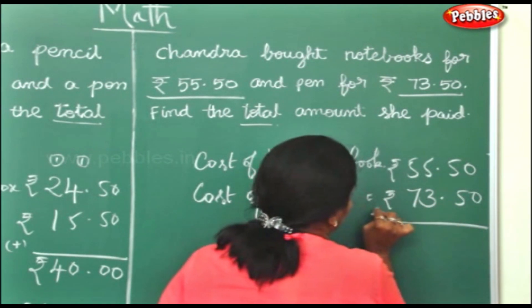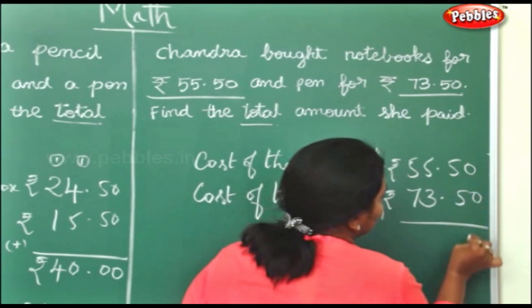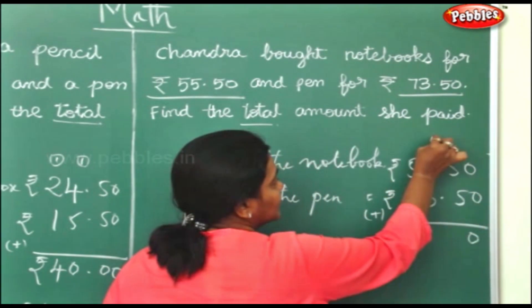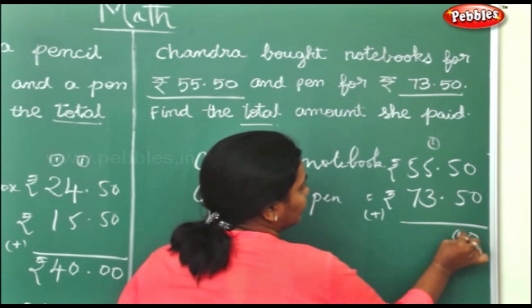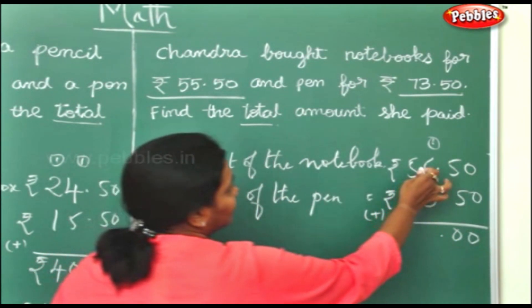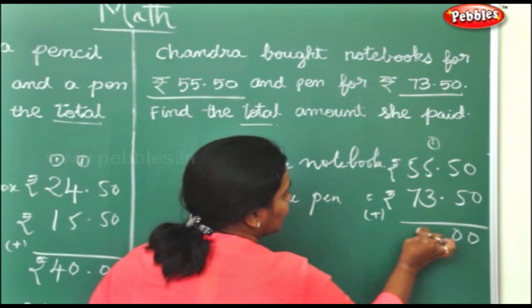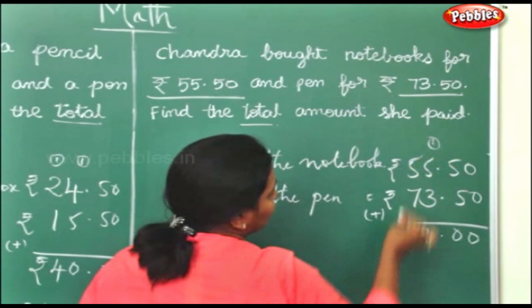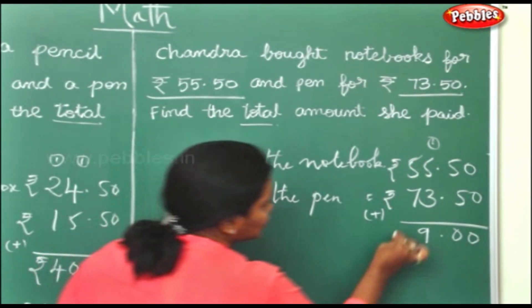Find the total cost — addition. 0 plus 0 is 0. 5 plus 5 is 10. 5 plus 1 is 6. 6 plus 3 is 9. 7 plus 5 is 12.